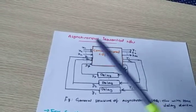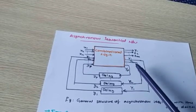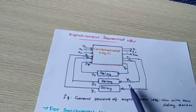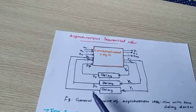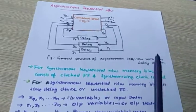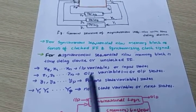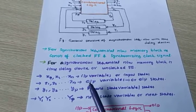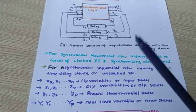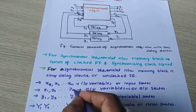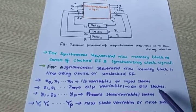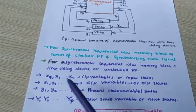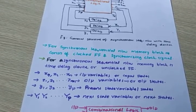In asynchronous there is no clock. The outputs Y1, Y2, ..., Yp (capital Y) are taken to the delay element and fed back to the input. The difference is: capital Y1, Y2, ..., Yp are the next state variables, and small y1, y2, ..., yp are the present state variables. x1, ..., xn are the input variables — called input states — and z1, ..., zm are the output variables — called output states.